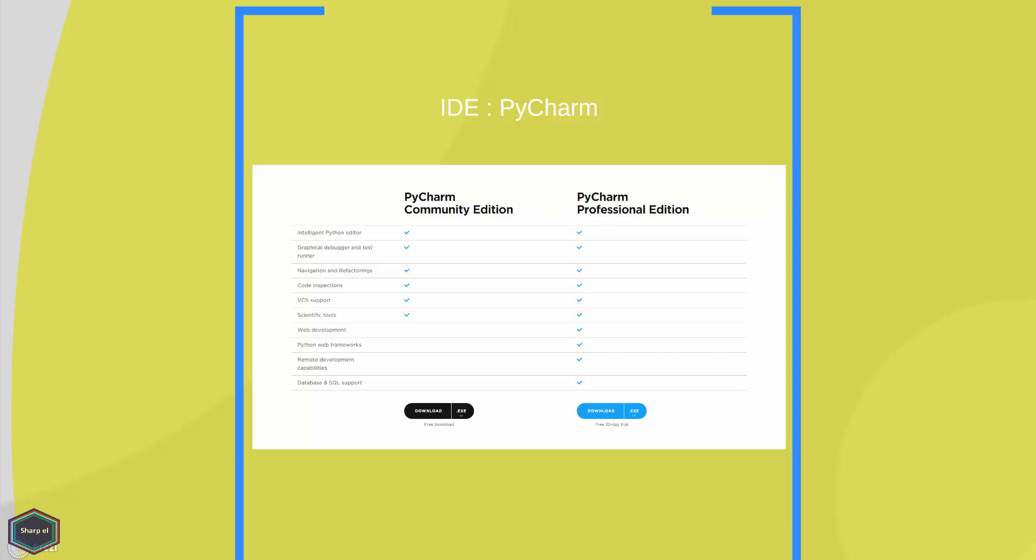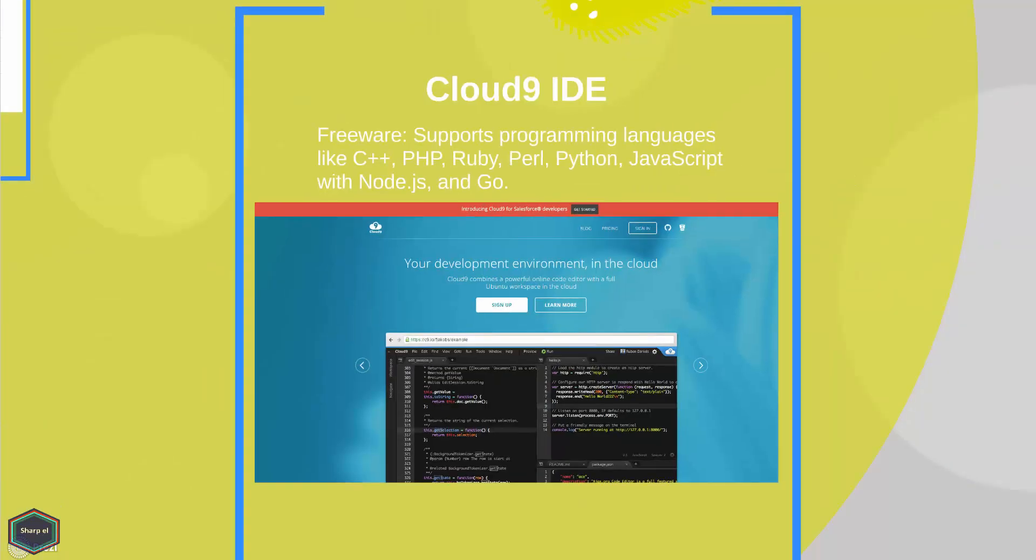You can also get a professional version for free if you are a student. You can also use cloud development platforms like Cloud9 for free. Cloud9 supports not only Python but also other programming languages.